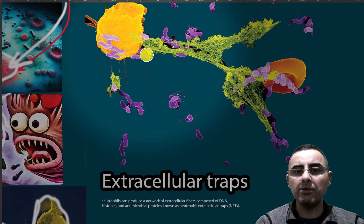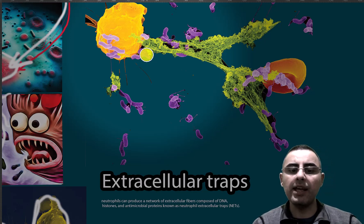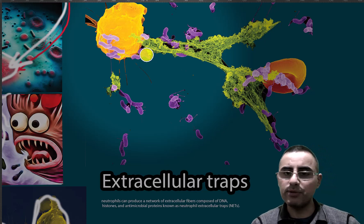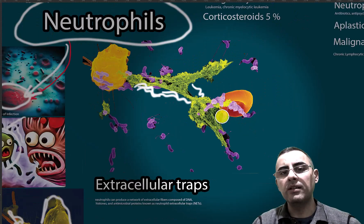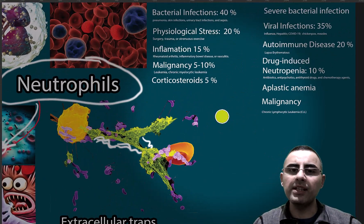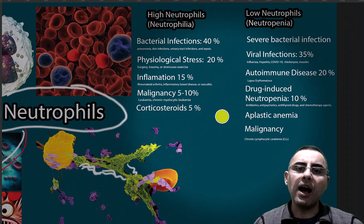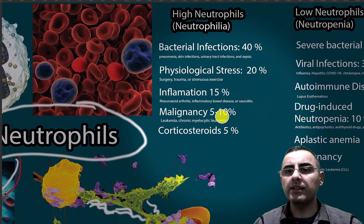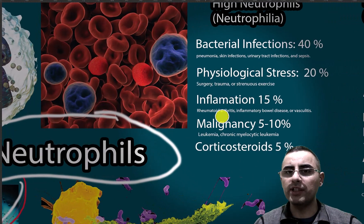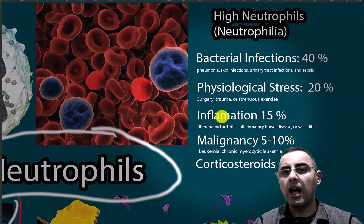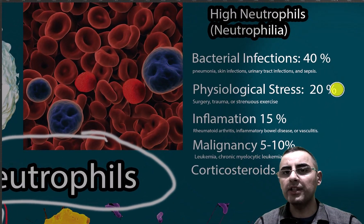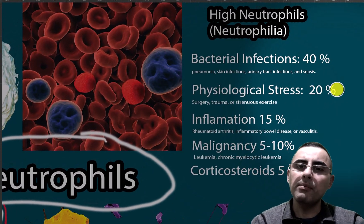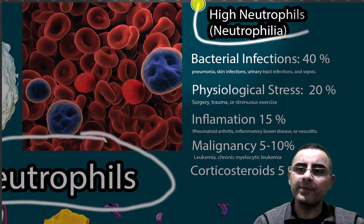Microbes are trapped in these extracellular traps and killed. Now let's discuss high neutrophil count and low neutrophil count. High neutrophil count is called neutrophilia.